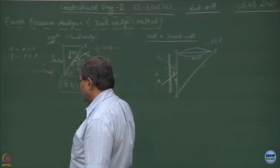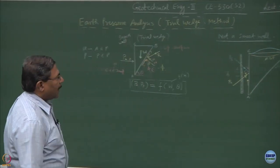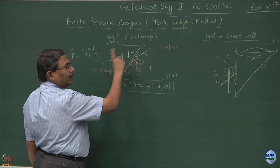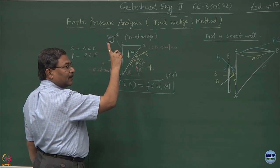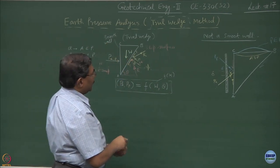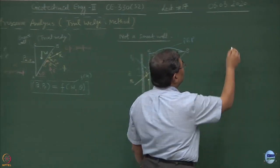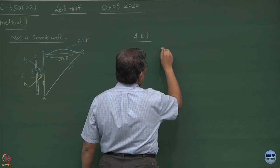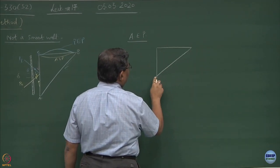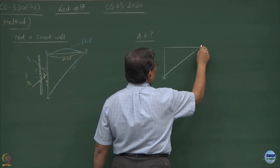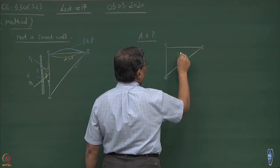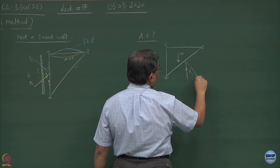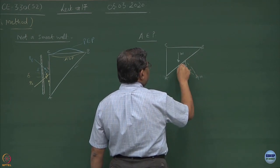I will just try to analyze the simple situations and then slowly move on to the complicated cases which are more practical. This is the system where three forces are acting, and hence you can do the equilibrium analysis. Let us do one of these cases — active earth pressure. This is the block ABC: weight is acting downward, there is a reaction coming from the slip surface with its normal component and shear component, and this is PA.